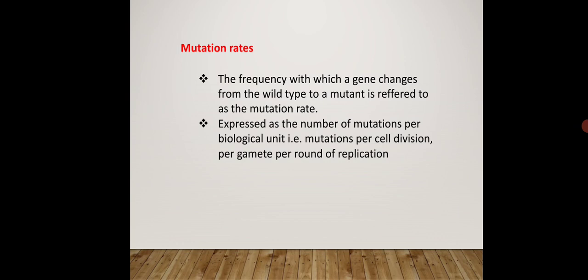The next term is mutation rate. Mutation rate is the frequency with which a gene changes from the wild type to the mutant type. It is expressed as a number of mutations per biological unit — that is, mutations per cell division.